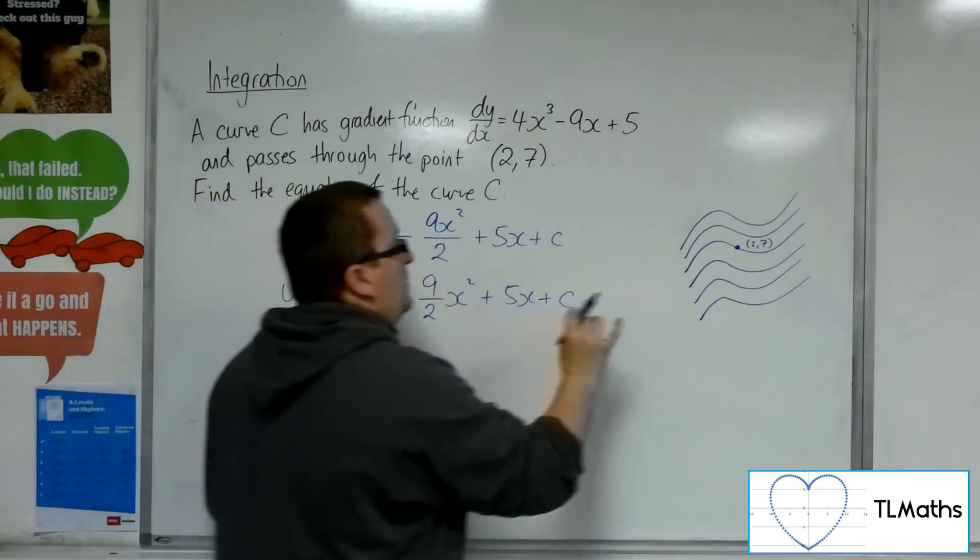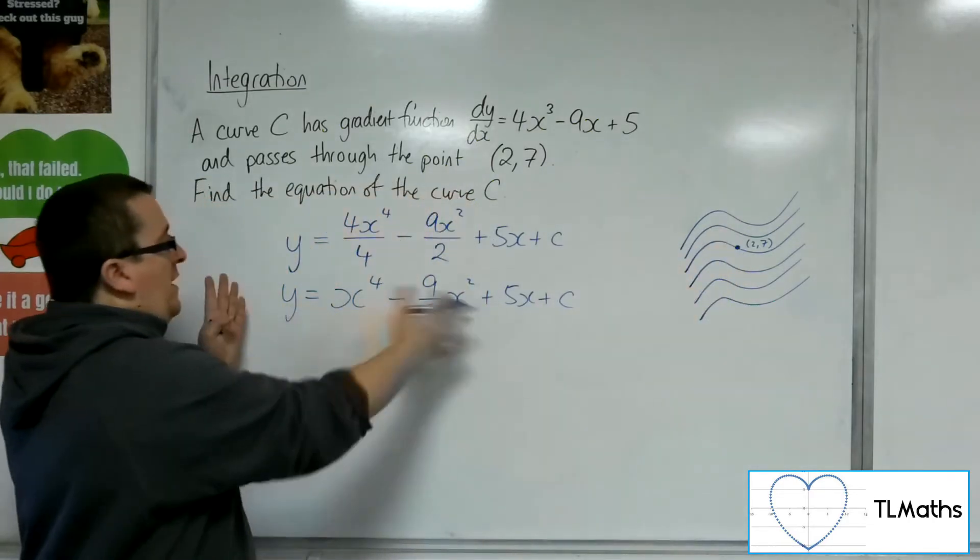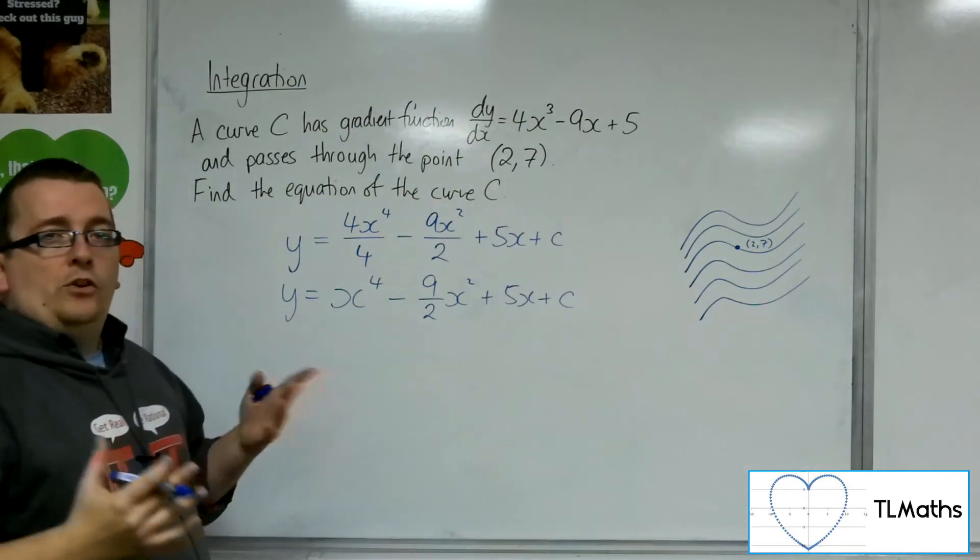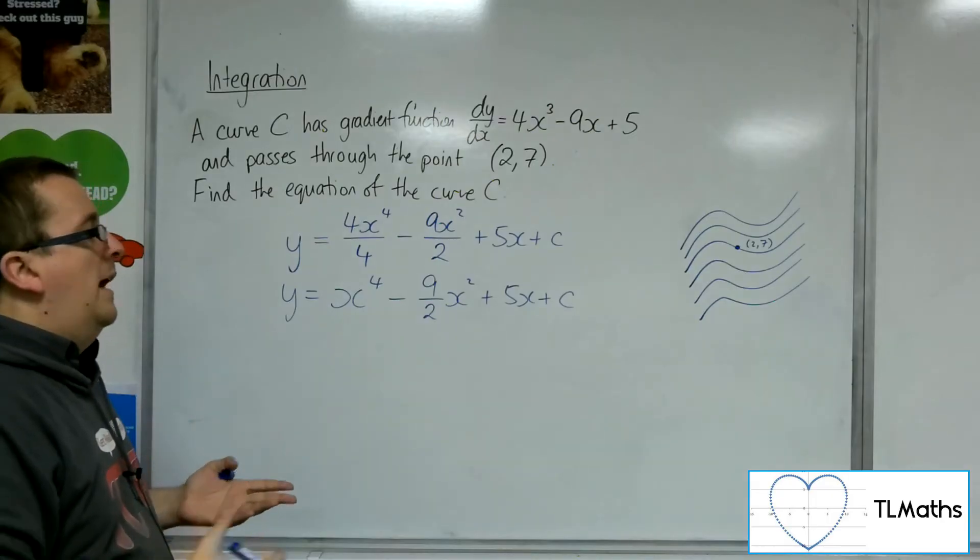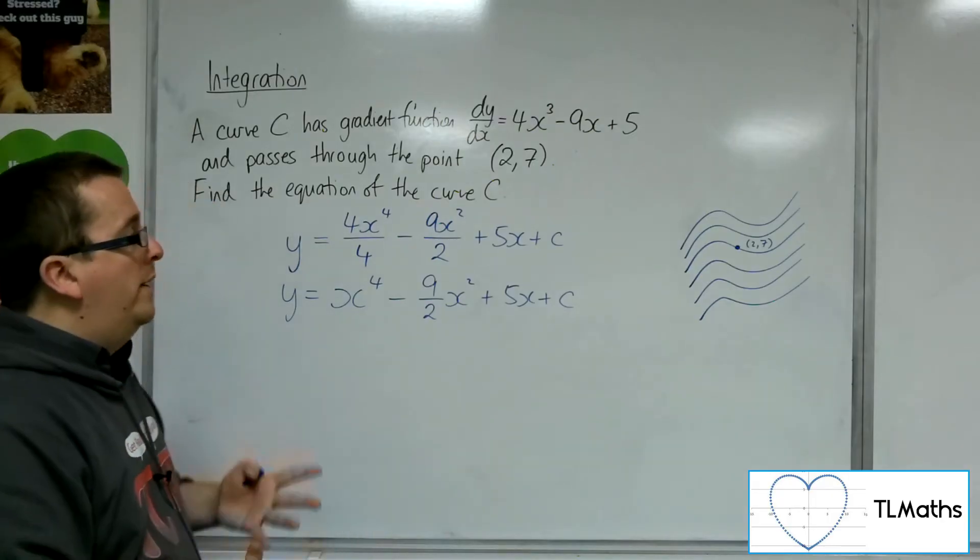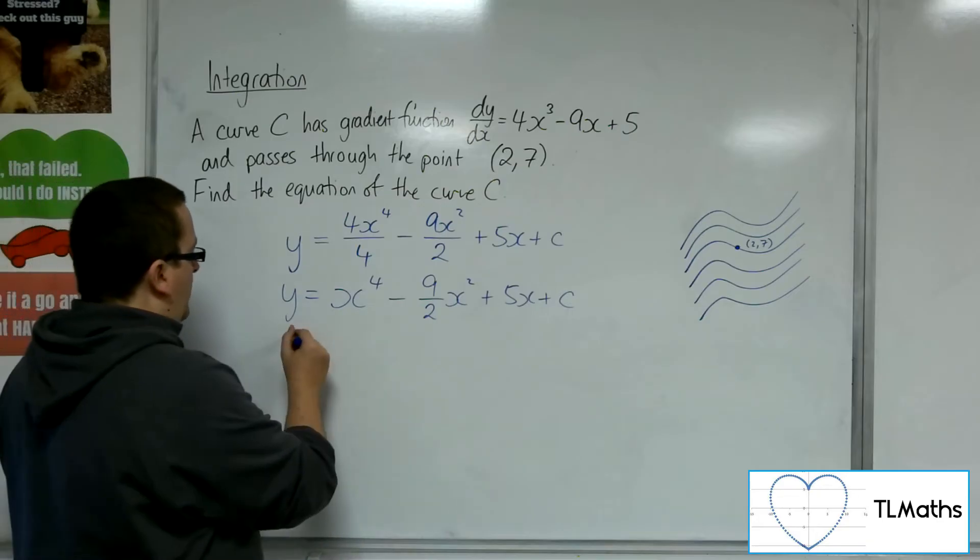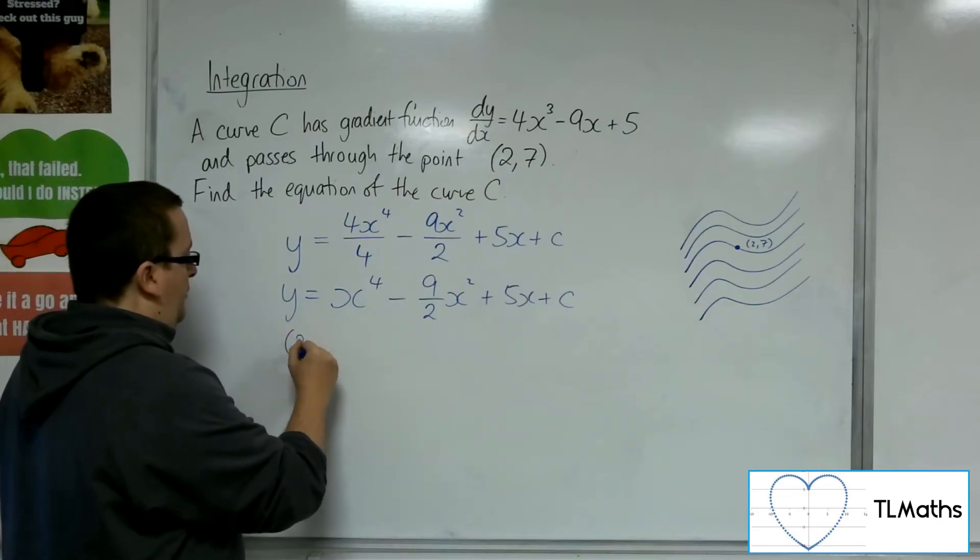So if we substitute in the coordinates (2,7) into this, this equation must satisfy that. And that will allow us to find the value of C that will work for it. So we're going to substitute in 2, 7.